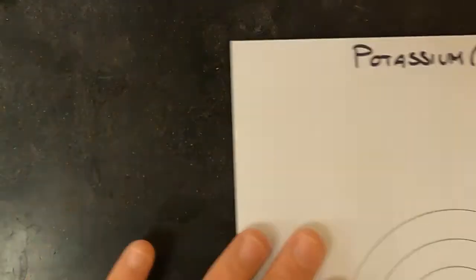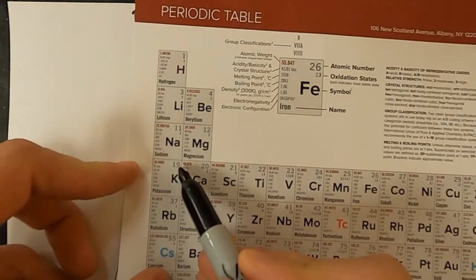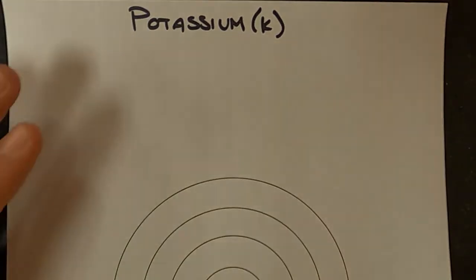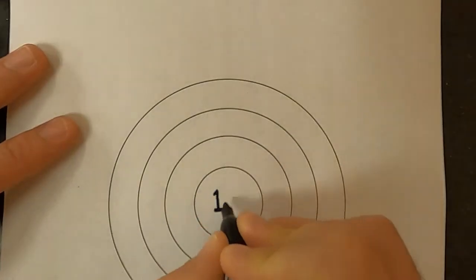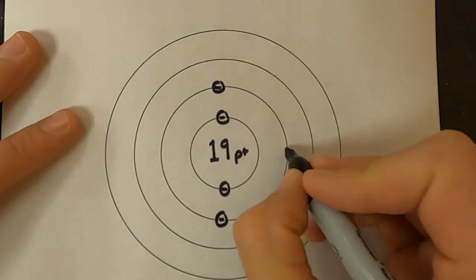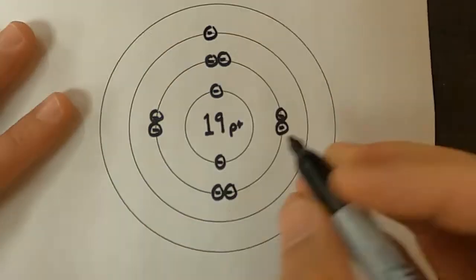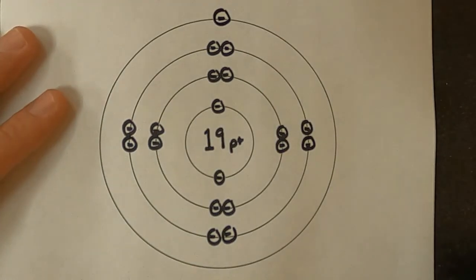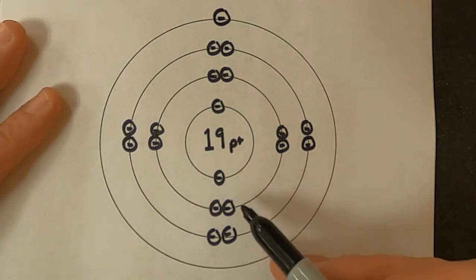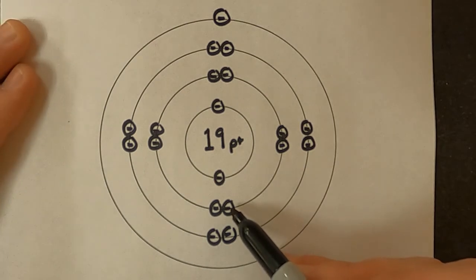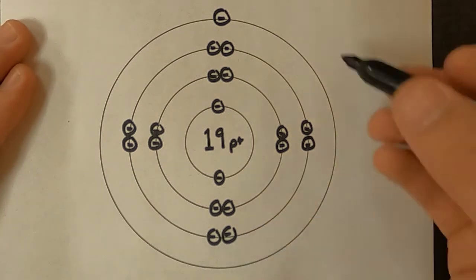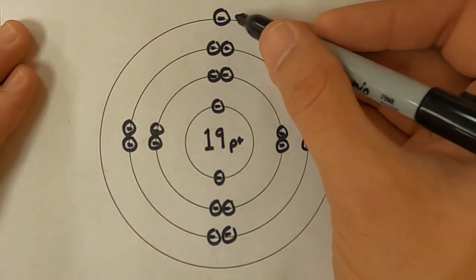Potassium should have 19 protons in the nucleus, and if it's going to be a neutral atom of potassium, then it will have 19 electrons. For a neutral atom of potassium, it has its first ring full with two electrons, its second energy level full with eight electrons, its third energy level full with eight electrons, and one remaining in its fourth energy level.